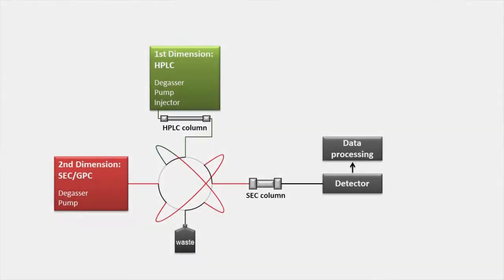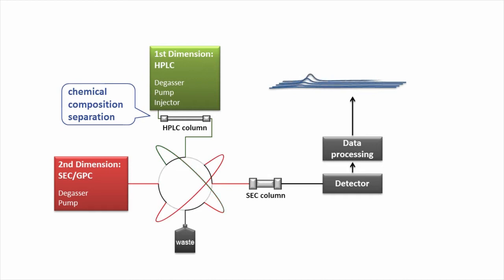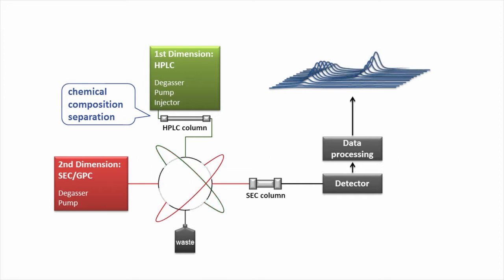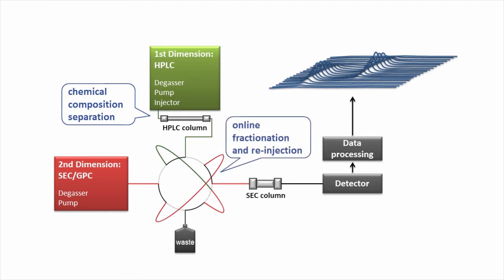Usually we use the separation according to chemical composition first. We separate a polymer according to its chemical heterogeneity, and then fractionate each part of the polymer effluent coming out of the column and automatically re-inject it into a size exclusion chromatography system to get a complete picture of the polymer.